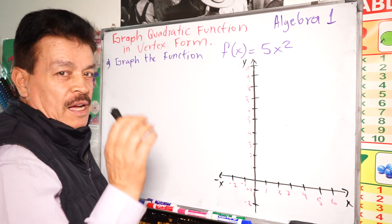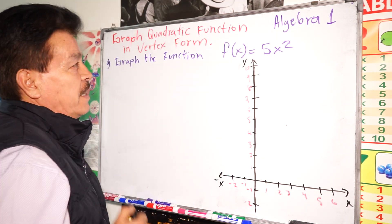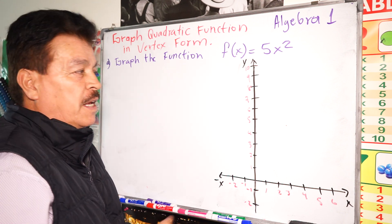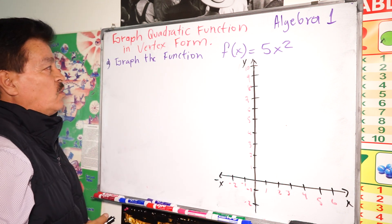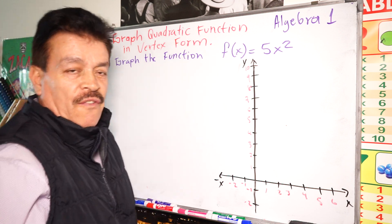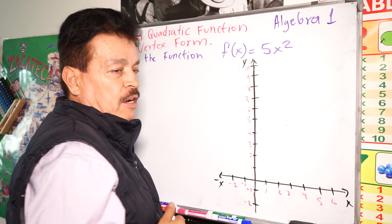Today we are going to learn a little bit about how to graph quadratic functions in vertex form. Our problem for today is graph the function f(x) = 5x².